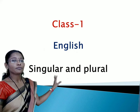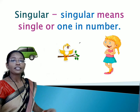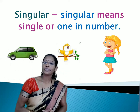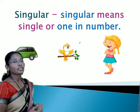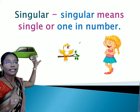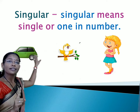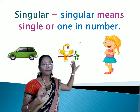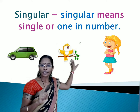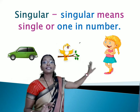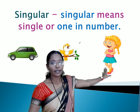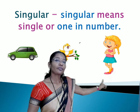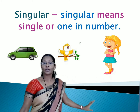First of all, let us see what is meant by singular. Singular means single or one in number. As you can see in this picture, a car — one in number — so car is a singular word. Here is a bird, it is one in number, so bird is a singular word. In the same way, here is one girl, and girl is also one in number, so the word girl is singular.